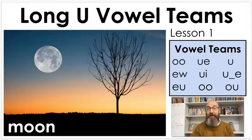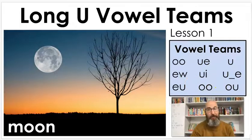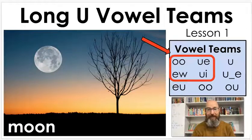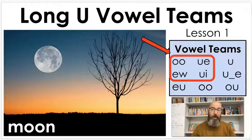Now, as you can see, there are lots of different ways over here that we can make the long U sound. We're not going to do them all this week — don't worry. We're really just going to focus on these four: OO, UE, EW, and UI. So we're really going to look at these the most, and we're going to work on blending some words that have those vowel teams in them.